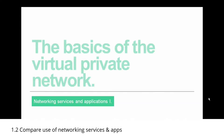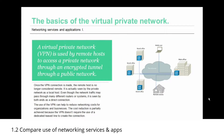I'm going to begin by talking about the basics of the virtual private network. A virtual private network, or VPN, is used by remote hosts to access a private network through an encrypted tunnel through a public network. Once the VPN connection is made, the remote host is no longer considered remote — it's actually seen by the private network as being a local host. Even though the network traffic may pass through many different routes or systems, it's seen by both ends as being a direct connection.